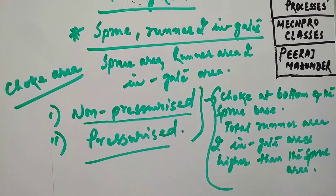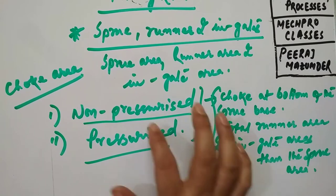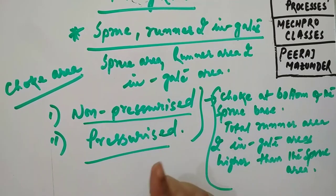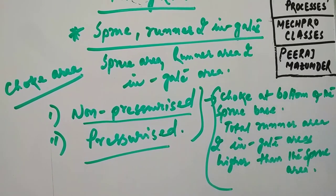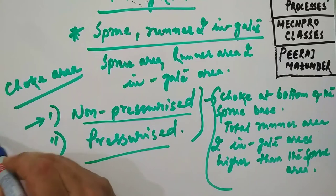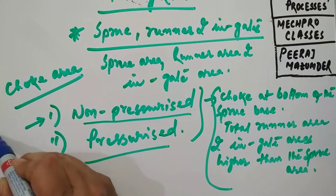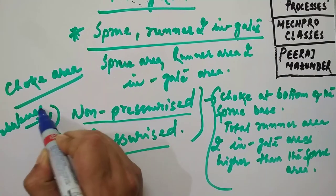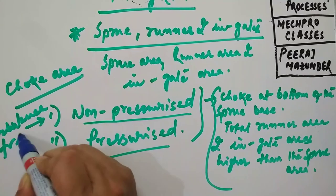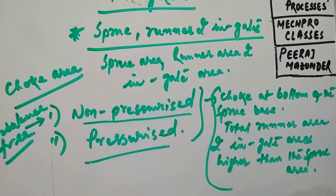One more thing I must tell you: in this particular non-pressurized system, there is no pressure existing in the metal flow system, and thus it helps to reduce turbulence. So you can take a note — turbulence free — as because there is no pressure existing in the metal flow system.